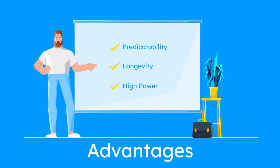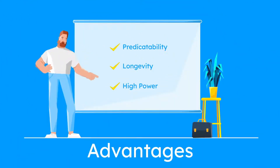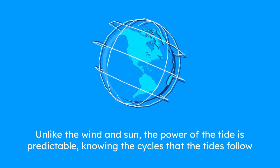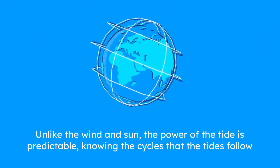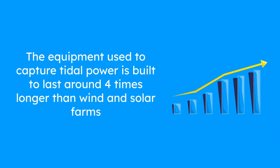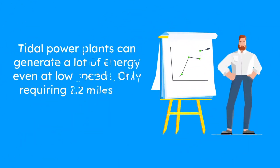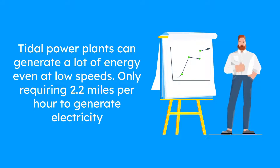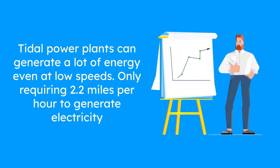Advantages of tidal power include predictability, longevity, and high power output. Unlike the wind and sun, the power of the tide is predictable, knowing the cycles that the tides follow. The equipment used to capture tidal power is built to last around four times longer than wind and solar farms. Tidal power plants can generate a lot of energy even at low speeds, only requiring 2.2 miles per hour to generate electricity.